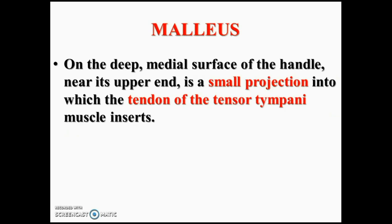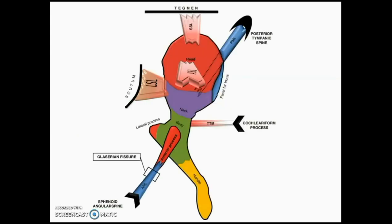The medius of the handle has a small projection into which the tendon of tensor tympani muscle inserts. You can notice all the ligaments of the malleus and that is the tendon of tensor tympani muscle. So these are the ligaments: three suspensory ligaments, two malleal ligaments, and one tendon along with the tympanic membrane, which stabilize the malleus.